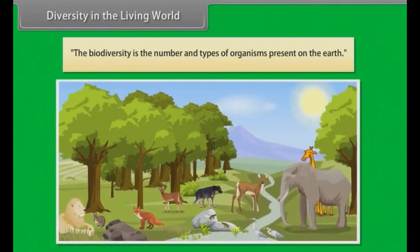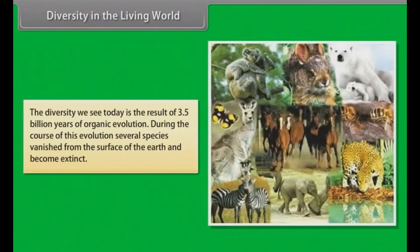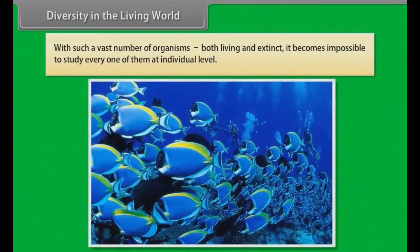Biodiversity is the number and types of organisms present on the earth. Every organism, whether plant or animal, is unique in itself. There is wide diversity in the flora (plants) and fauna (animals) of the world. The diversity we see today is the result of 3.5 billion years of organic evolution. During this evolution, several species vanished and became extinct. With such a vast number of organisms, both living and extinct, it becomes impossible to study every one of them at the individual level.